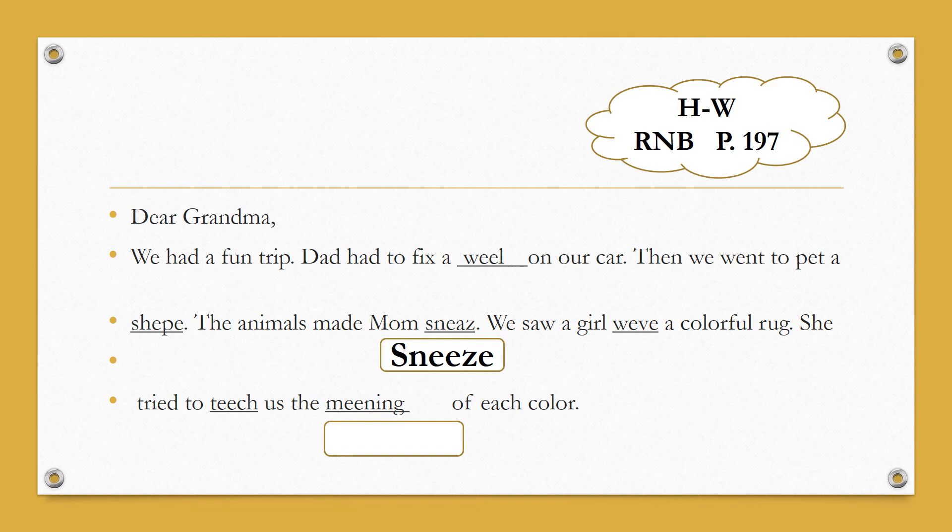Class, let's read the sentence. We're gonna circle the wrong word and replace the wrongly spelled word with the right answer or the correctly spelled word. For example, dear grandma, we had a fun trip. Dad had to fix a wheel, a wheel of a car. How is it spelled? Of course this is wrong. So this corresponding is gonna be W-H-E-E-L.